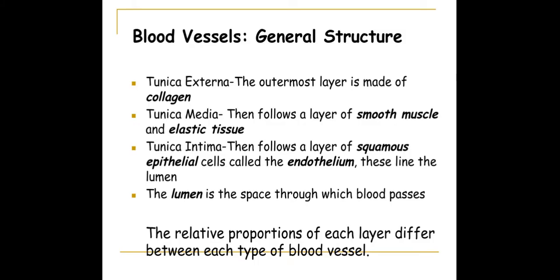The elastic fibre will stretch and recoil back to its original shape. The tunica intima is the layer that lines the innermost side of the vessel, and this is made of squamous epithelial cells. They are smooth, so they help to reduce the friction between the blood flow and the wall of the vessel. And then we have the lumen, which is where the blood passes through.